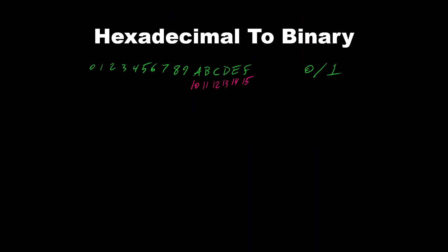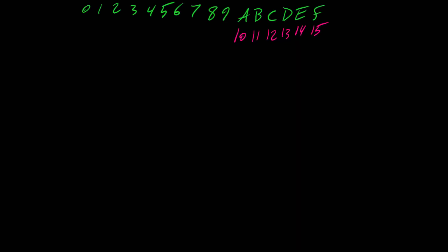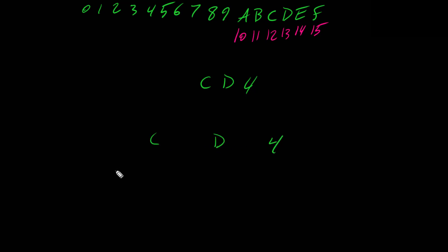Now let's convert a hexadecimal number to binary. Let's use the hexadecimal number CD4. First we separate C, D, and 4, then we put 4 bits for every hex digit.